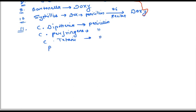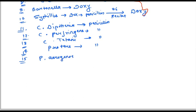The next bacteria is Proteus — we give penicillin. The 15th one is Pseudomonas aeruginosa. For Pseudomonas aeruginosa, we give an antibiotic derived from penicillin: ticarcillin or carbenicillin. So we have discussed five bacteria for which we give penicillin — five problems, one solution.